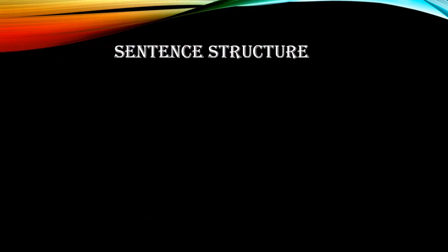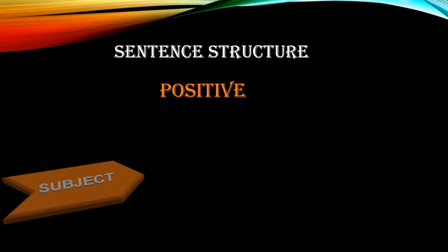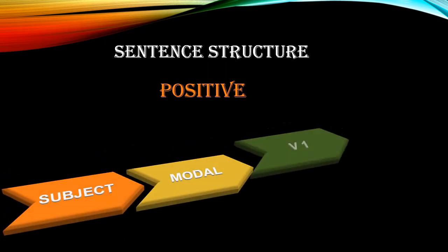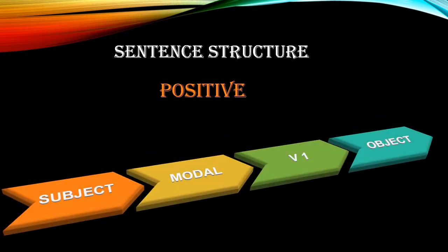Now we will revise the sentence structure while using a modal verb in different kinds of sentences — positive, negative, and interrogative. In positive sentences, the structure is: Subject + Modal Verb + First Form of verb + Object. We should always remember that these modal verbs work as helping verbs, and after them we always use the main verb's first form.